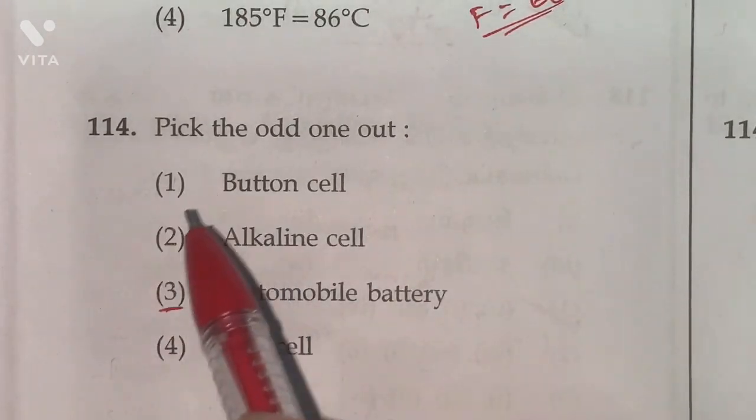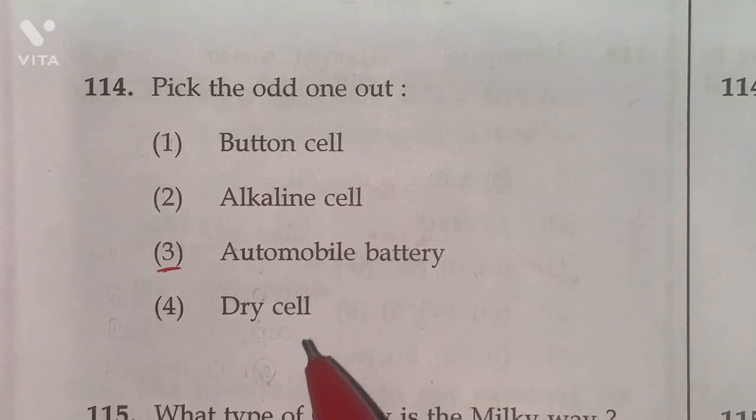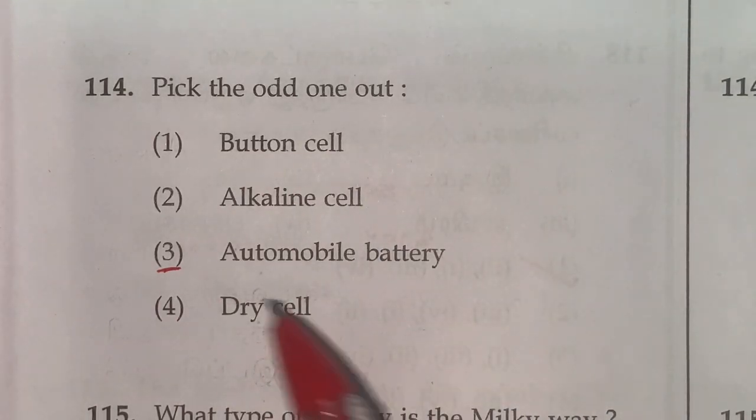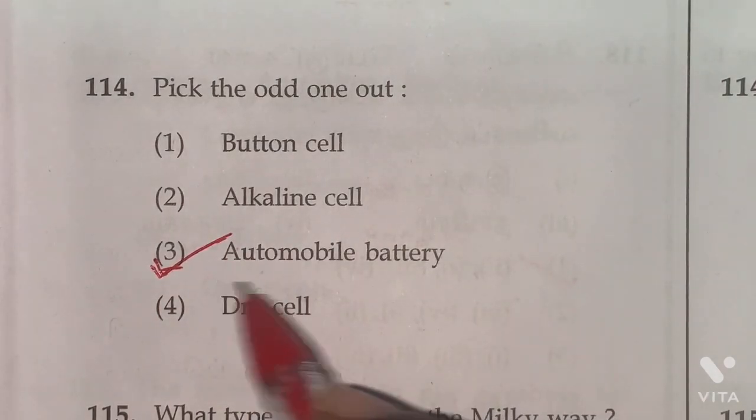114th pick the odd one out. Button cell, alkaline cell, dry cell, these are all primary cells. We cannot recharge again. So automobile battery is the right answer. This belongs to secondary cell, we can recharge.